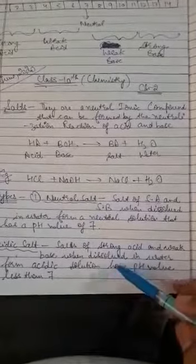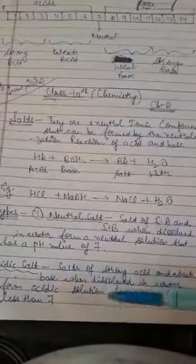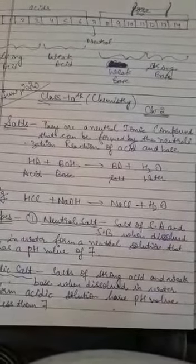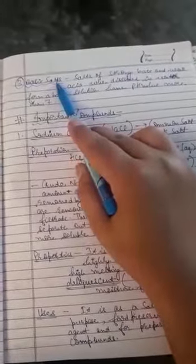Acidic salt is salt of strong acid and weak base. When dissolved in water, they form an acidic solution. Stronger acid with weak base forms acidic salt. When stronger base reacts with weak acid, they form basic salt. These are the types of salt.